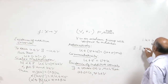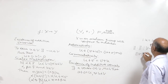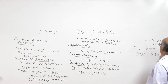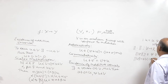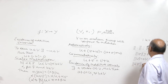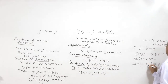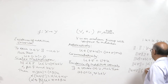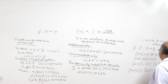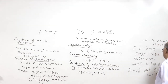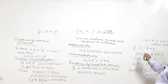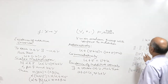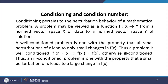If V satisfies all these properties, we say V is a vector space. It is called a normed vector space or normed linear space if we further define a function — the norm — from V into R such that: norm of v is greater than or equal to 0; norm of v equals 0 if and only if v equals 0; norm of alpha v equals |alpha| times norm of v; and norm of u plus v is less than or equal to norm of u plus norm of v — the triangle inequality. Here, X is the vector space of data and Y is the vector space of solutions.